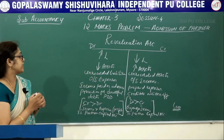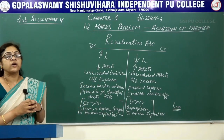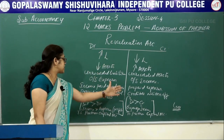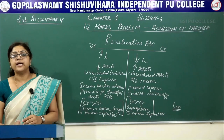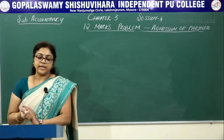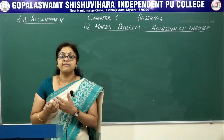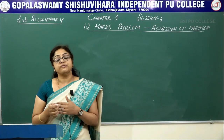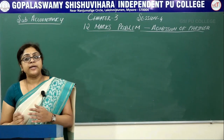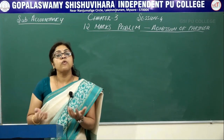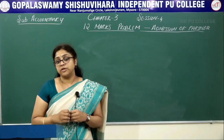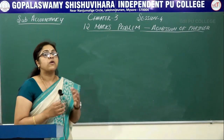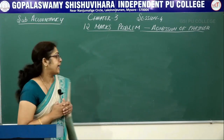The revaluation account is closed by transferring whatever balance has arrived to the partners capital account. Regarding the partners capital account: all transactions relating to the partners of the firm are recorded in the books through their capital accounts. For example, amounts brought in by the partner into the business as well as share of profits are all recorded in the partners capital account.